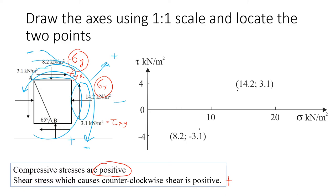So what we know is these two points. Point one will be sigma equal to 14.2 with a positive shear stress of 3.1, and point two will be sigma equal to 8.2 with a negative shear stress of 3.1.